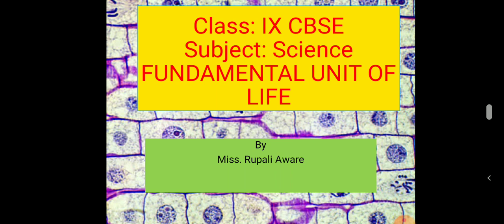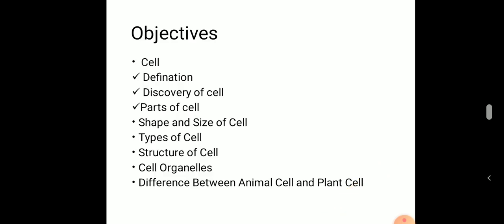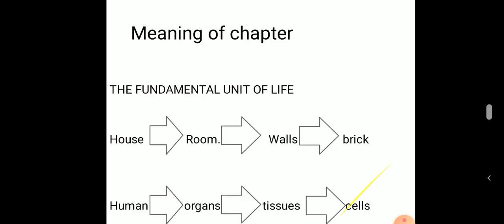Today we are going to learn about one of the chapters from biology: the Fundamental Unit of Life. In this chapter you will understand concepts like the definition of a cell, discovery of cell, parts of cell, shape and size of cell, types of cell, structure of cell, cell organelles, and the difference between animal cell and plant cell.